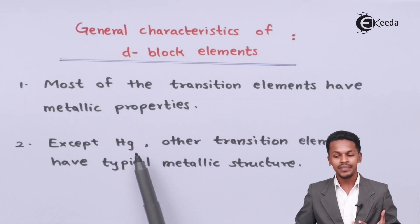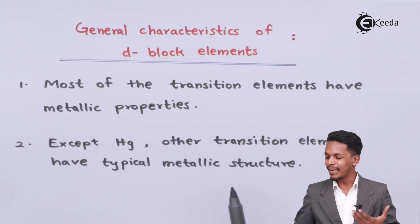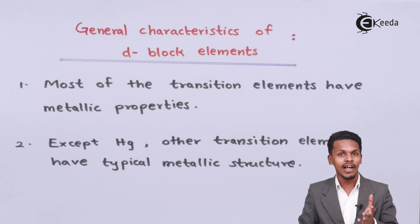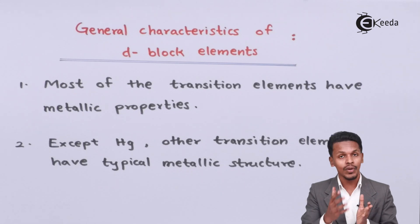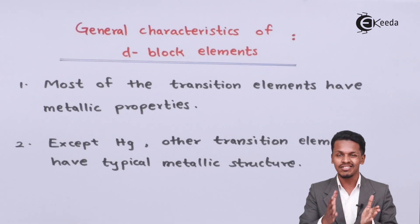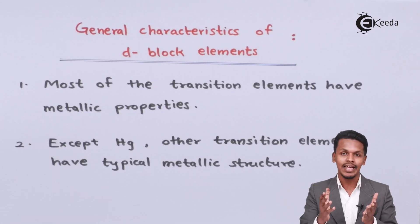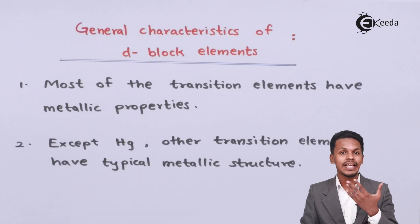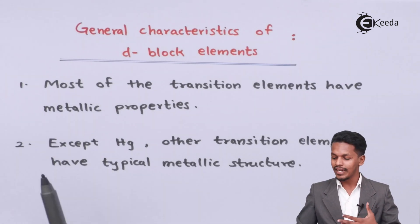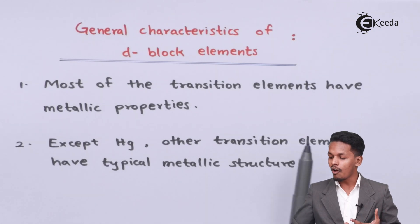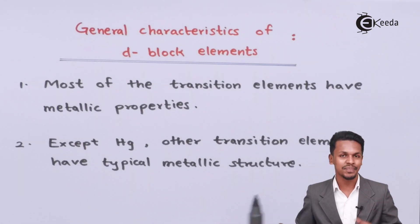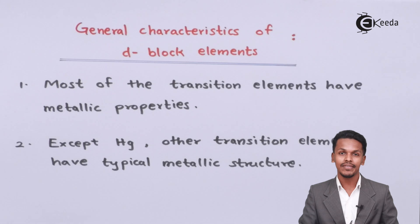Except mercury, other transitional elements have typical metallic structure. Metals are solid in nature, and all metals are basically solid at room temperature, except mercury, which is liquid at room temperature. So therefore, all the transitional elements have typical metallic structure.